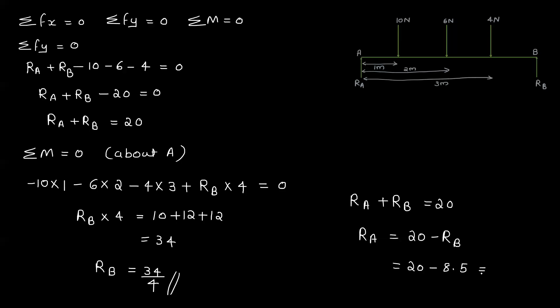RA equal to 20 minus 8.5. That is equal to 11.5. Then RA equal to 11.5N.